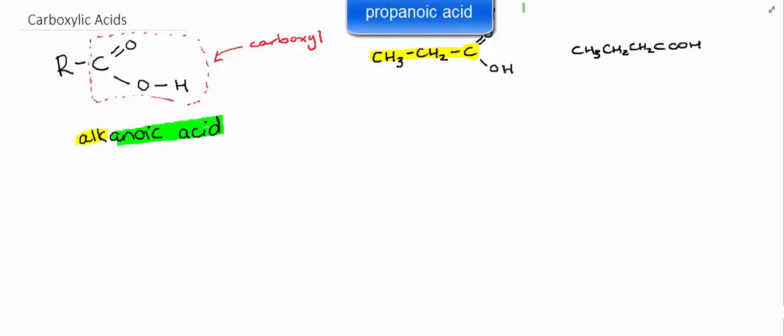Now over here we can see the carboxyl group written in condensed form. So you need to be able to recognize that also. And you also need to recognize to include that carbon in the name. So in this case we've got four carbons written in the chain, so this would be butanoic acid.